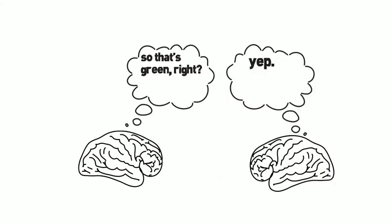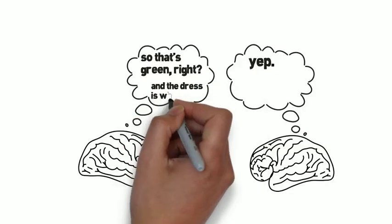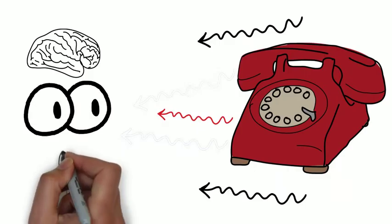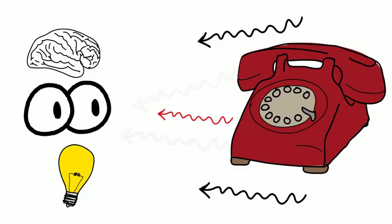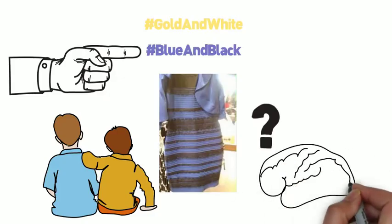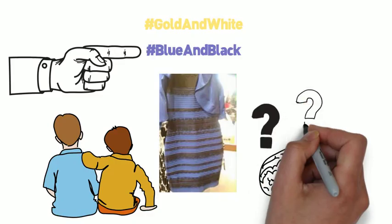We see things differently when our minds make different calculations about what light to throw away. Since our eyes evolved to see during bright daylight, colors can get lost in translation in low-light or shadowy situations. In less-than-ideal light, each of our brains has to figure out how to interpret the colors.